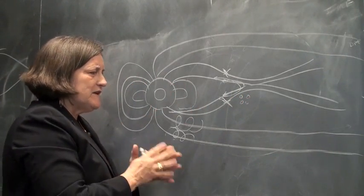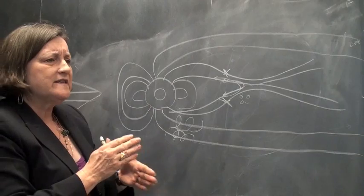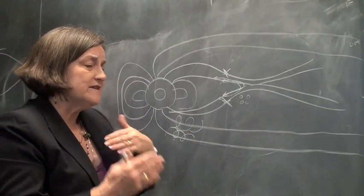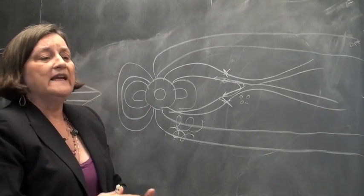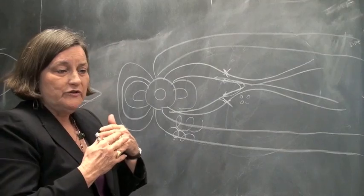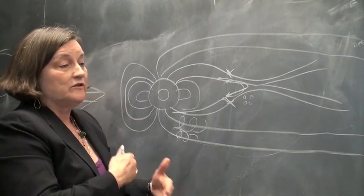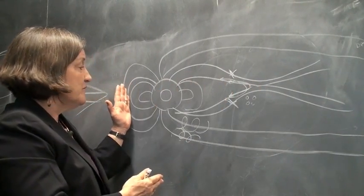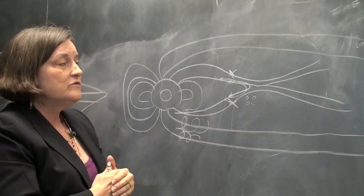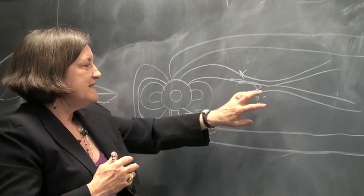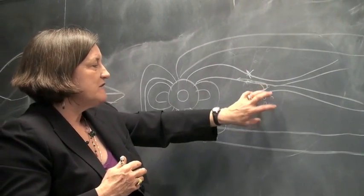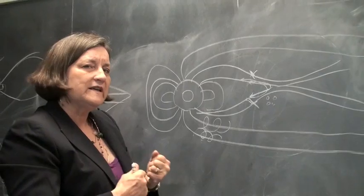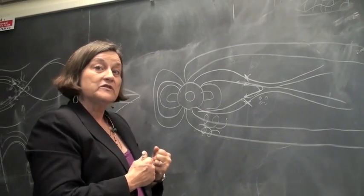Magnetospheric reconnection is a pervasive process. It occurs in the sun, it occurs in nuclear fusion machines, and it occurs in the Earth's tail and on the Earth's nose. But only by taking spacecraft and really going there and studying it can we really understand why this process occurs and what controls it.